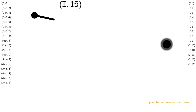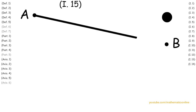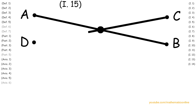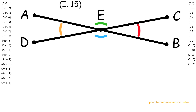To begin this proposition, we are given the straight line AB and the straight line DC intersecting at point E. We will prove that angle AEC is congruent to angle DEB, and angle AED is congruent to angle CEB.